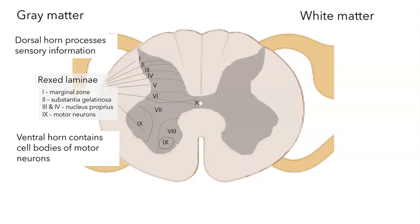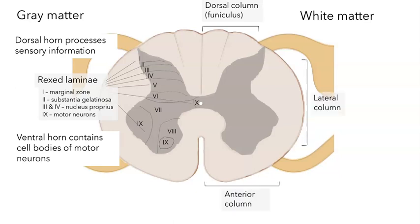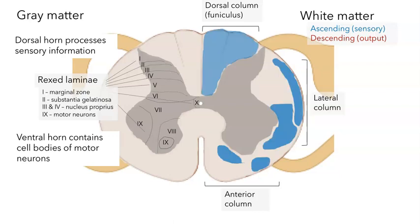The white matter is also organized. We can divide it into three broad anatomical regions: the dorsal column (also called the dorsal funiculus), the lateral column, and the anterior column. The nervous system keeps sensory and motor information separate in the white matter as well. Some parts carry sensory information up to the brain — these are ascending pathways — while other parts carry information from the brain and brainstem down, called descending information. The dorsal column is purely sensory, whereas the lateral and anterior columns have a mix of ascending and descending information.